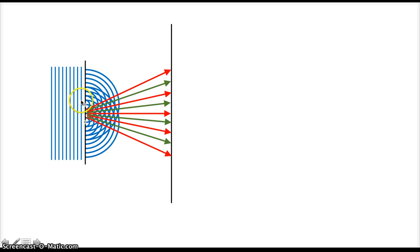So now imagine instead of sending water waves through the two slits, we send instead light waves. The exact same thing happens. You get this constructive and destructive interference. So for light, wherever you have constructive interference, that's a bright spot. The intensity is really high.